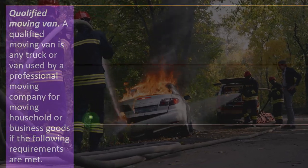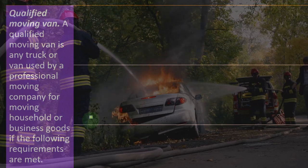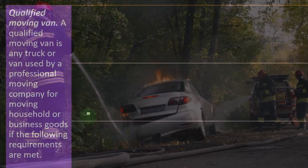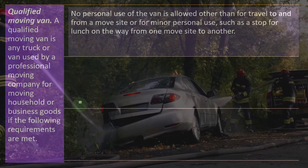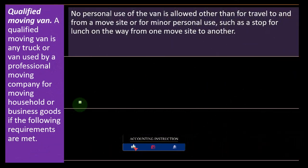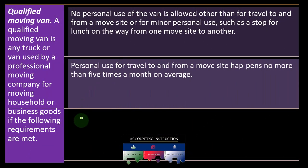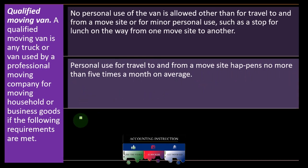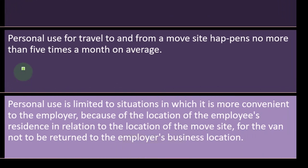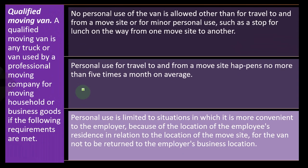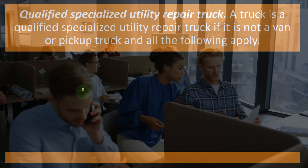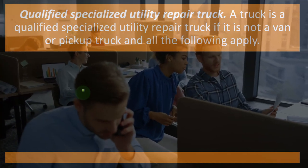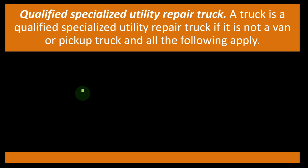Qualified moving van: a qualified moving van is any truck or van used by a professional moving company for moving household or business goods if the following requirements are met. No personal use of the van is allowed other than travel to and from a move site, or minor personal use such as a stop for lunch on the way from one move site to another. Personal use for travel to and from a move site happens no more than five times a month on average. Personal use is limited to situations where it is more convenient to the employer — given the employee's residence location relative to the move site — for the van not to be returned to the employer's business location. In other words, it's not a commuting vehicle; its general purpose is moving goods.